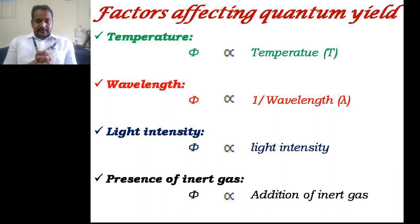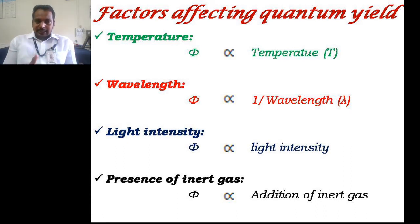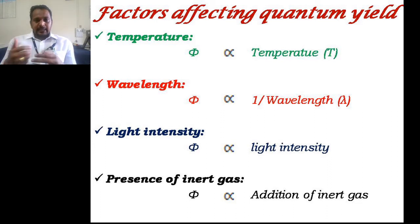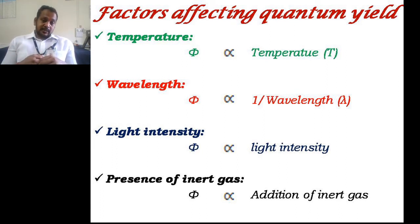The third factor is light intensity. With increasing intensity of light, the velocity of the photochemical reaction increases, and the rate constant of the photochemical reaction increases. Due to this, for absorption of a single photon, maximum number of molecules are going to react or decompose. If maximum number of molecules are reacting, the quantum yield should increase. So light intensity is directly proportional to the quantum yield of photochemical reactions.